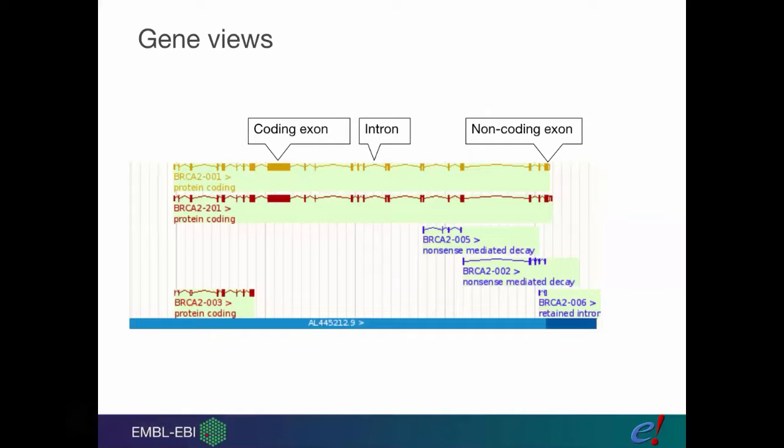Coding exons are filled in, whereas non-coding exons are empty. We can see this filled-in block is the coding. This empty block at the end is our untranslated region.